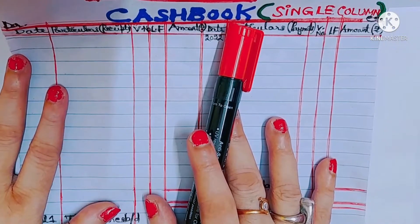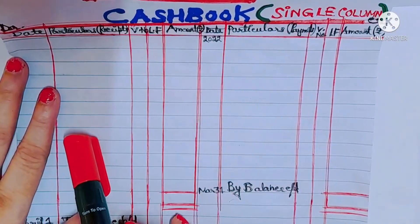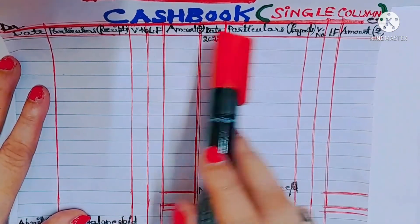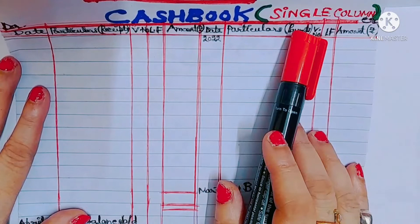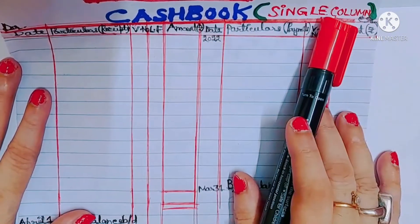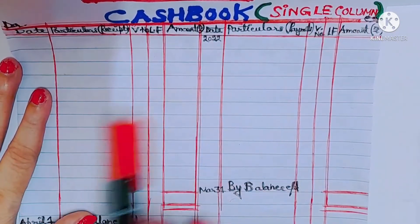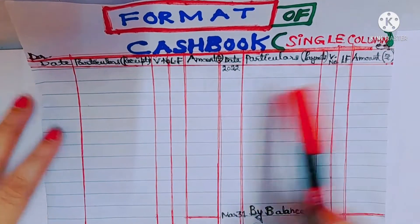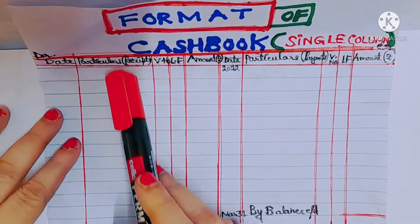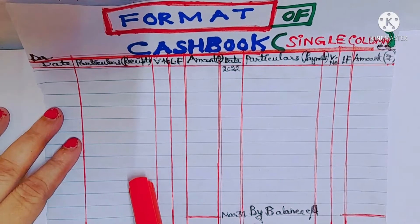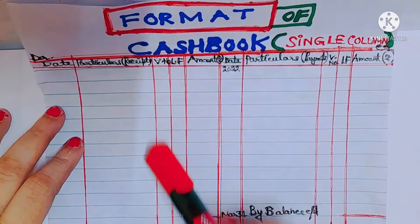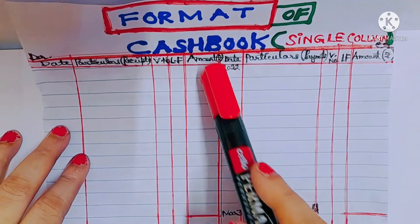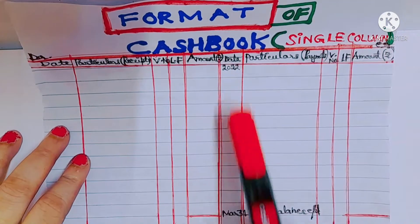Cash book comes under real account. What comes in is debit; what goes out is credit. This is the format of the single column cash book, divided into two sides: one is the debit side and one is the credit side. On the debit side, the columns are: date, particulars or receipts, voucher number, ledger folio, and amount.